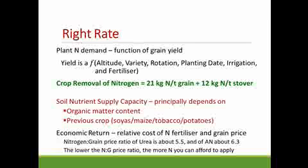You don't necessarily have to apply the full 33 kilograms of nitrogen per ton of grain, because the soil has the capacity to supply some of that nitrogen. That depends on the organic matter content of your soil and the previous crop in the rotation. Most soils in Zimbabwe have fairly low organic matter, so nitrogen from organic matter is generally low, making the previous crop more important. Soybeans, being a legume, generally supply more nitrogen than maize. In fact, if you leave maize stover on the field and plant wheat, you can have a short period of negative nitrogen availability, because the nitrogen is used by microbes to decompose the stover before it becomes available to the wheat.